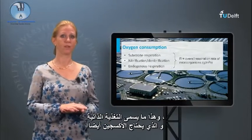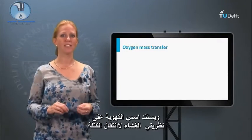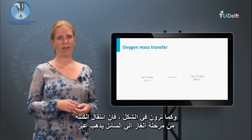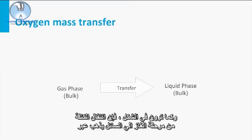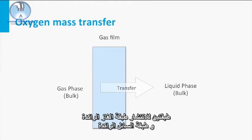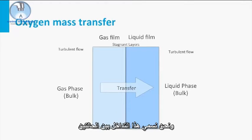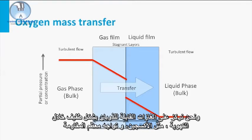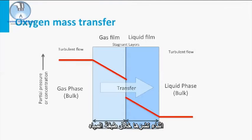This is called endogenous respiration, which needs oxygen too. The basics of aeration is based on the two-film theory of mass transport. As you can see from the figure, the mass transfer from the gas phase into the liquid goes via two diffusion layers: the stagnant gas film and the stagnant liquid film. We call this the interface between the two phases. Slightly soluble gases like oxygen encounter most resistance diffusing through the water layer.